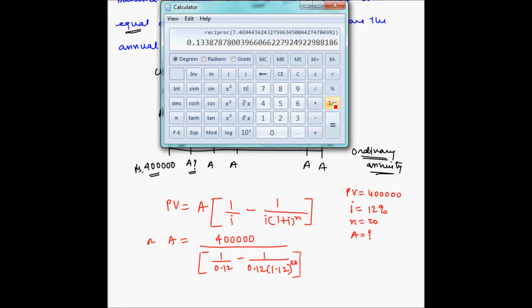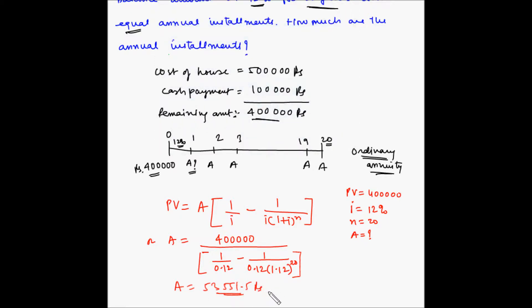Now again this is 1 by x because this is in the denominator, and then multiply this by 400000. So A turns out to be ₹53,551.5. So this is the annual installment that you need to pay to the bank for the next 20 years, and that is because you have taken a loan of 4 lakh rupees from the bank.